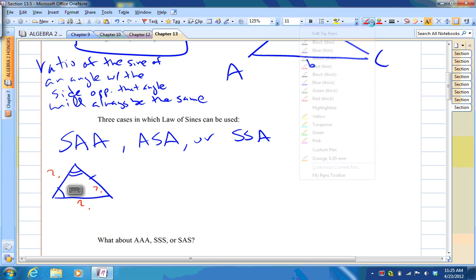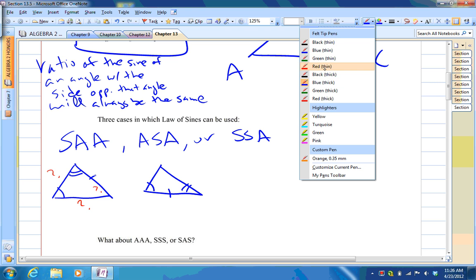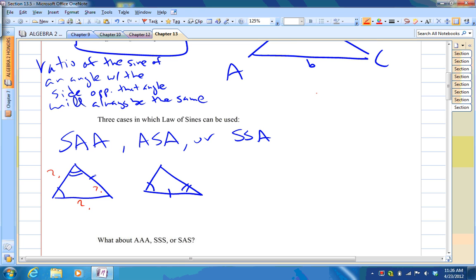If you had ASA, so you knew an angle, a side, and an angle in that order, you can use the fact that all the angles have to add to 180 to get that angle. And then you can use the Law of Sines to get this side, because you already know a pair of side and angles. And you can use the Law of Sines again to get that side.